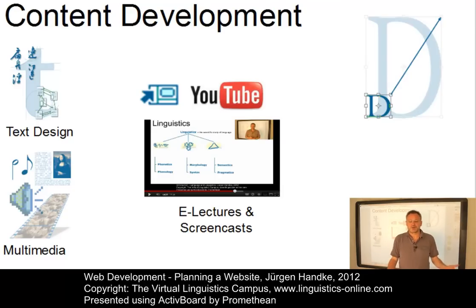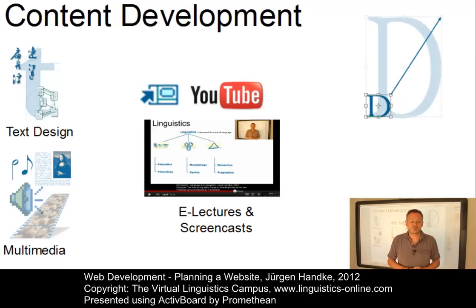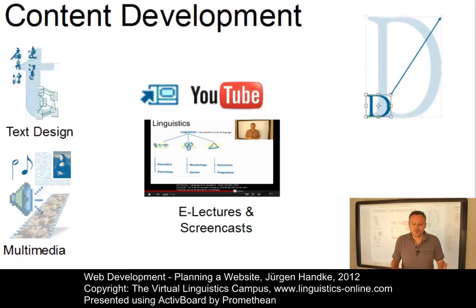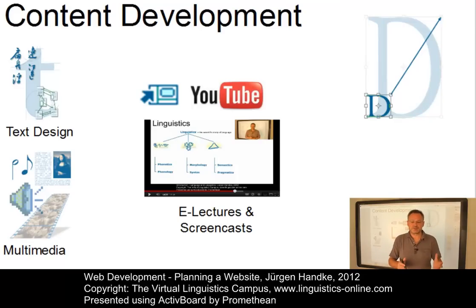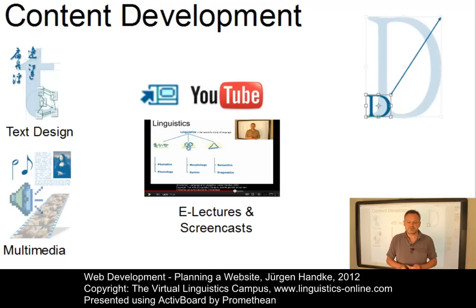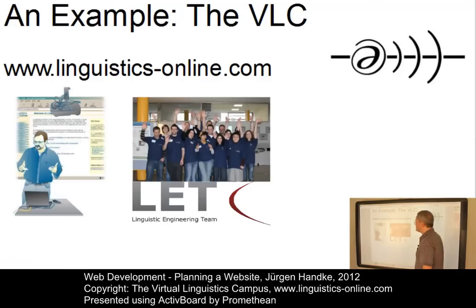Last but not least, the website has to be tested, proof-read, and maintained. Thus, there must be team members who are responsible for testing, maintenance, and publishing. Some of the responsibilities of these roles overlap. It is possible that one member covers several fields of web publishing. In fact, this is the case in most teams, which normally consist of 5 to 10 people. And this applies to the Virtual Linguistics Campus.